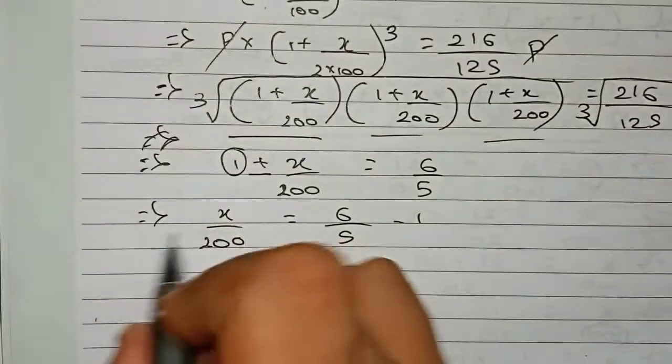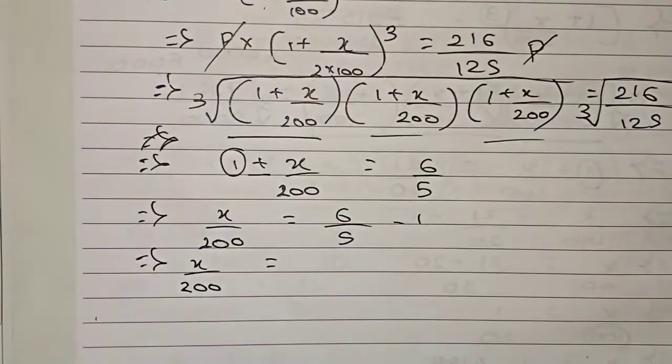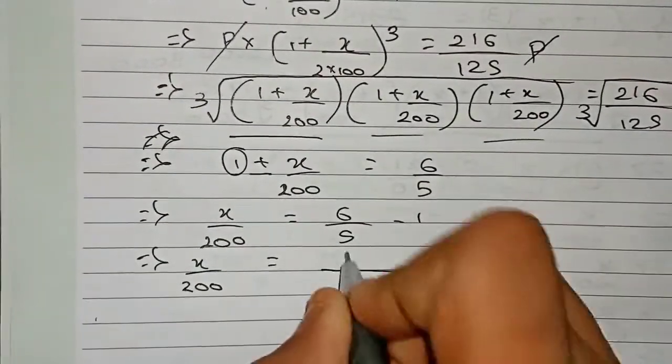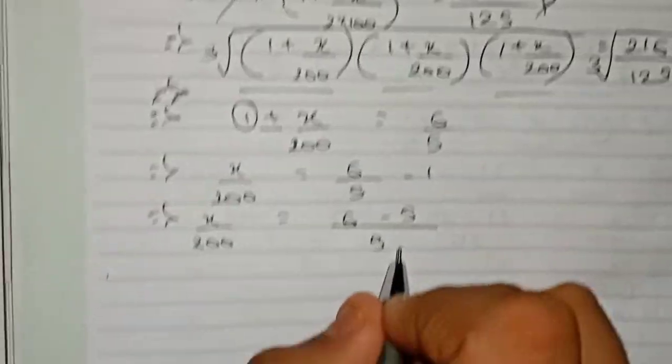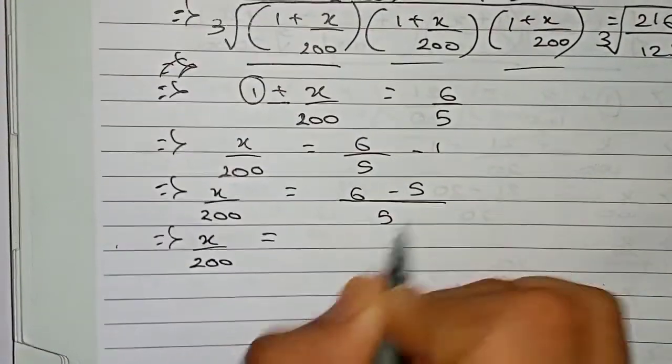x by 200 is equals to, we take the 5 as common here, 6 minus 5, equals to x by 200 equals to 1 by 5.